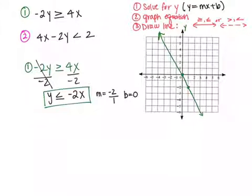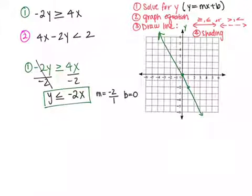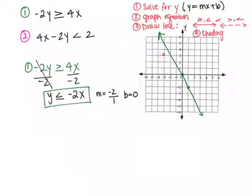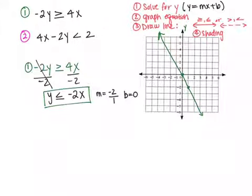Now I have to do the shading — that's the fourth step. When we're doing shading, we want to look at the inequality sign. This inequality sign says that y is less than. So if y is less than, you want to shade in the area where y values are more negative — in other words, shade below the line. If y were greater, I would shade above it. So I'm going to grab a highlighter and shade below the line.